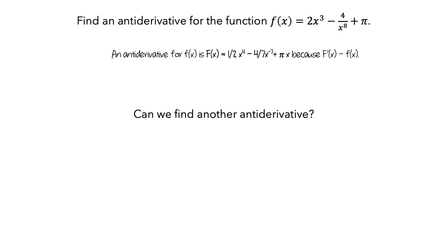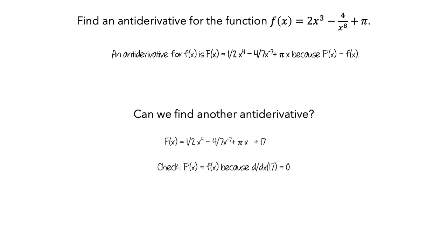It turns out that there are many, many other functions that are antiderivatives of little f. For example, start with the same capital F as before and then add 17. We can check by computing the derivative of capital F, and we get little f, because the derivative of 17 is 0. There is nothing special about 17. So other antiderivatives of little f are capital F plus any constant c, where c is any real number.